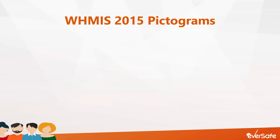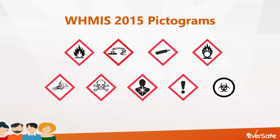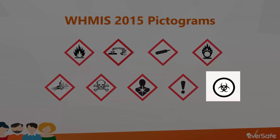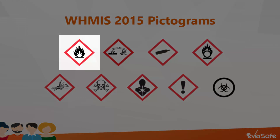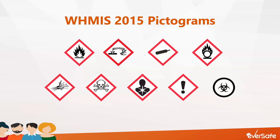WHMIS 2015 pictograms are simple, graphic images that vividly highlight the types of hazards present in various hazardous products. The standardized pictograms act as a visual, easy-to-understand tool for helping workers to immediately identify the types of hazards present in certain products. A quick glance at a pictogram will alert a user of potential dangers and compel them to take the necessary precautions. Except for the biohazardous infectious materials pictogram, all WHMIS 2015 pictograms are made of a distinctive red diamond border with the symbol representing the hazard inside that border. Together, the border and the symbol are called a pictogram and are assigned to a specific hazard category or class.